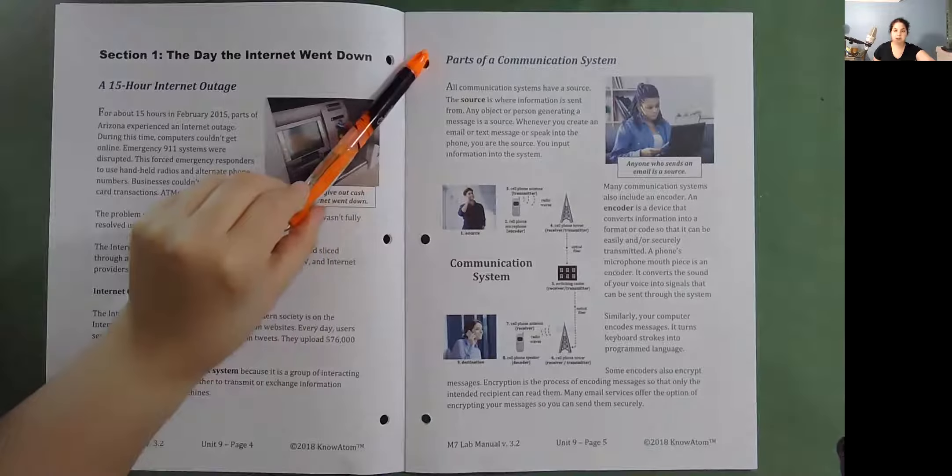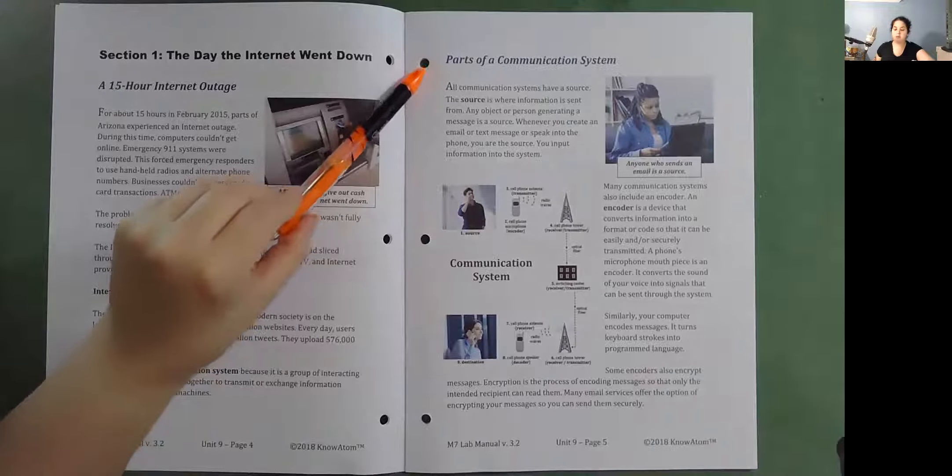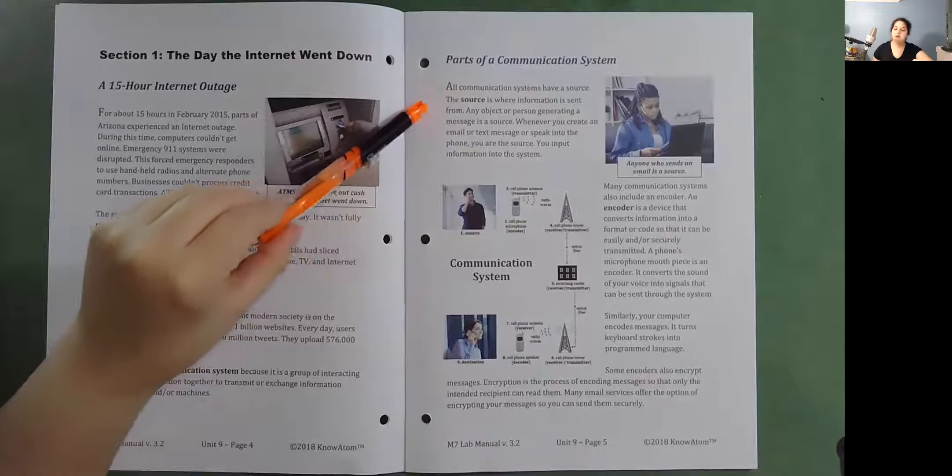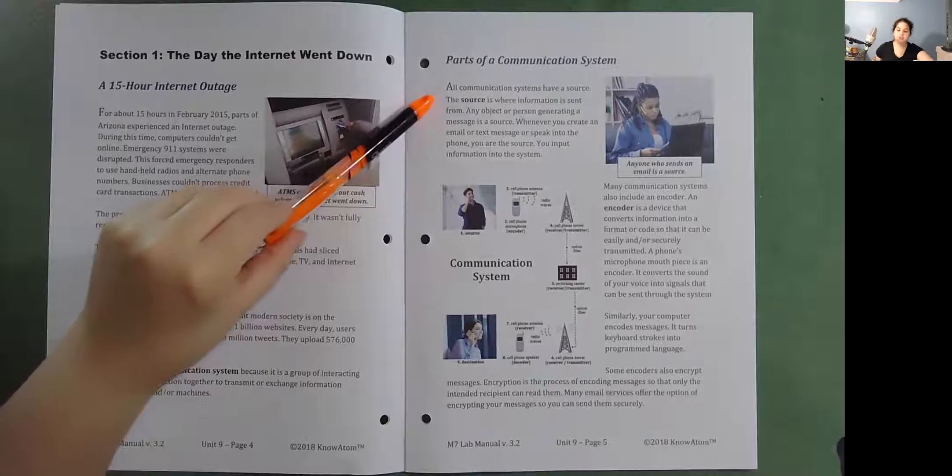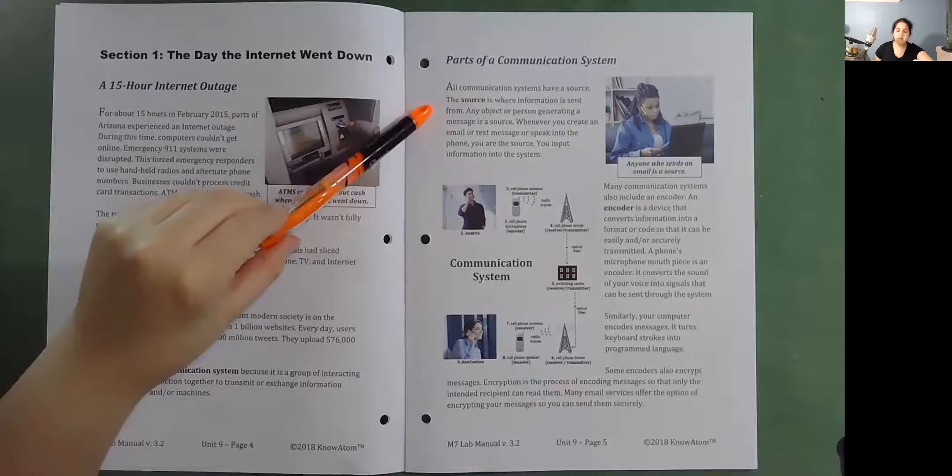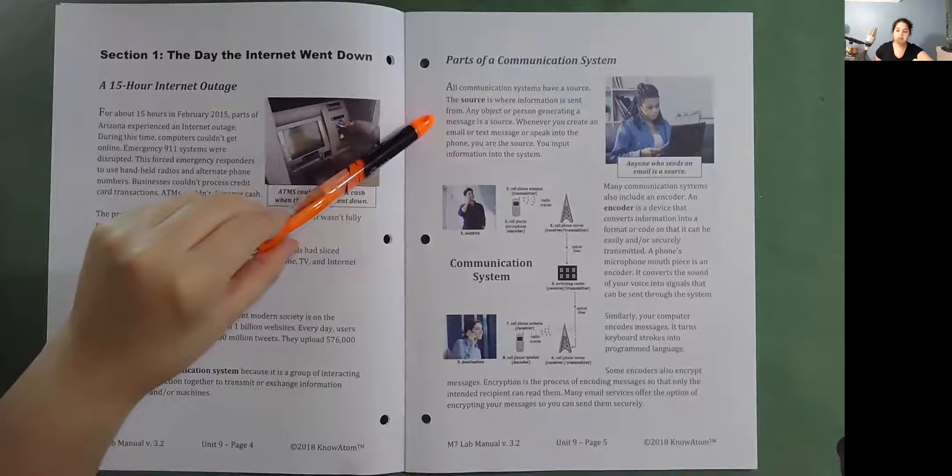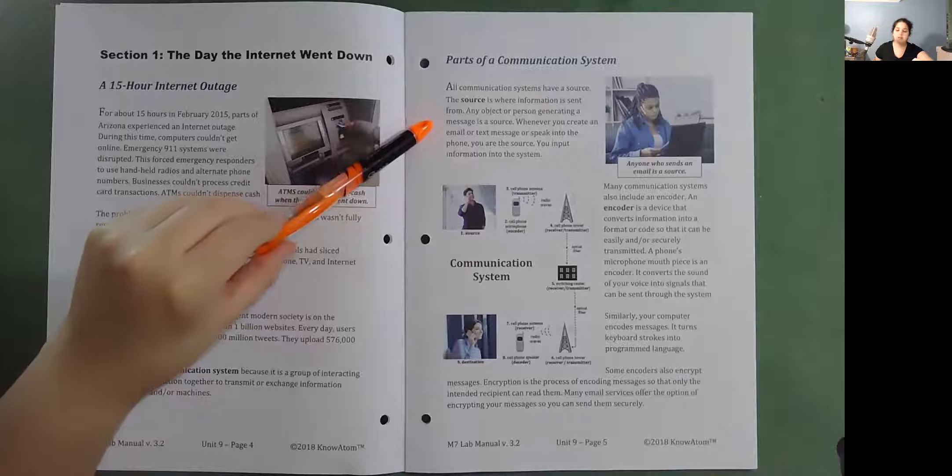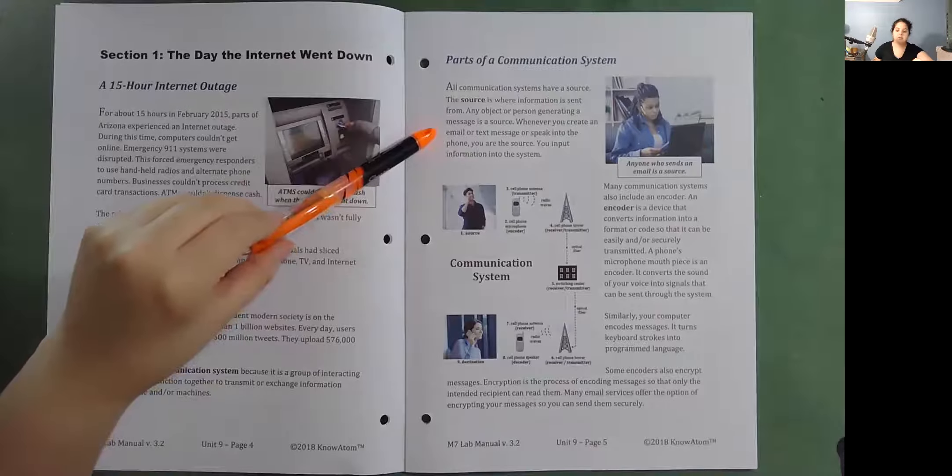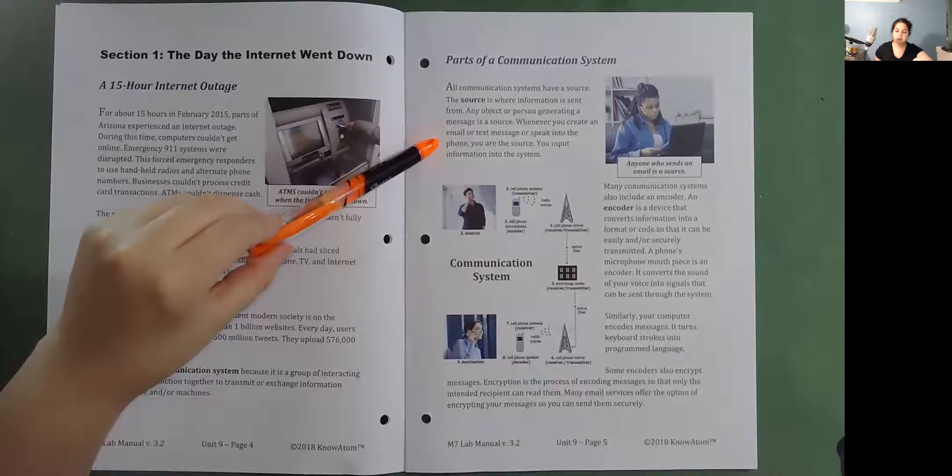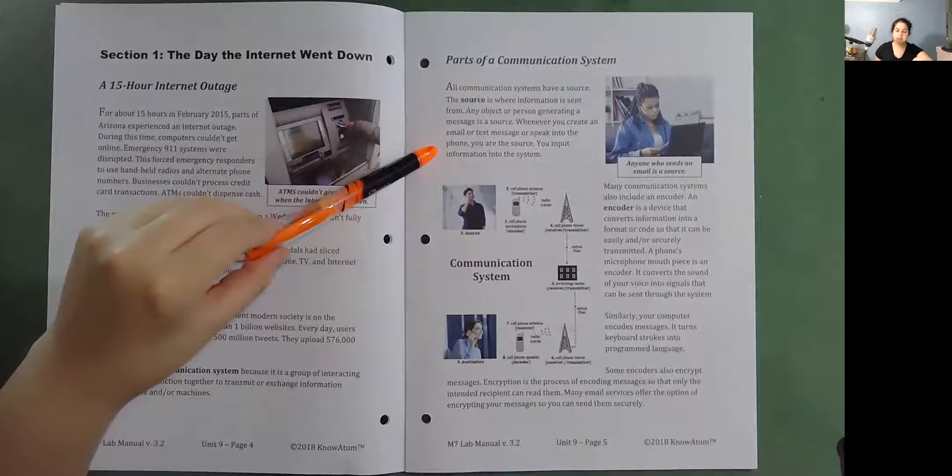Parts of a communication system. All communication systems have a source. A source is where information is sent from. Any object or person generating a message is a source. Whenever you create an email or text message or speak into the phone, you are the source. You input information into the system.